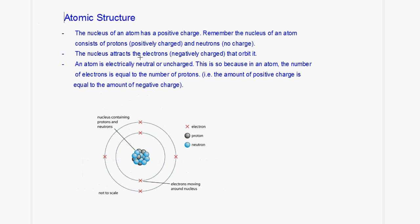Recall that within the nucleus we have protons and neutrons. Neutrons have no charge on them, but a proton has a positive charge. This means that the nucleus of an atom has a positive charge. The nucleus attracts electrons, which are negatively charged, around it. This force between the nucleus and the electrons produces the centripetal force required to keep the electrons moving around the nucleus. The atom is electrically neutral because normally you have an equal amount of positive and negative charge.